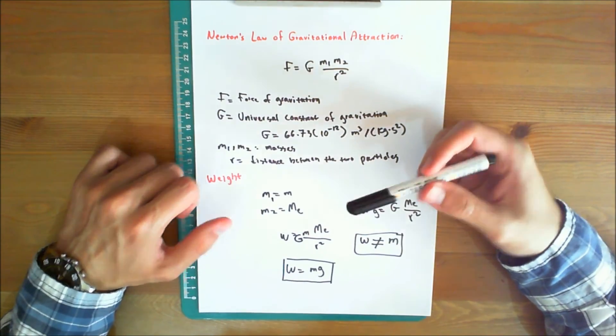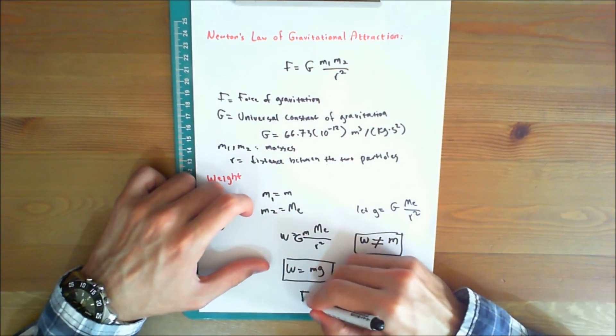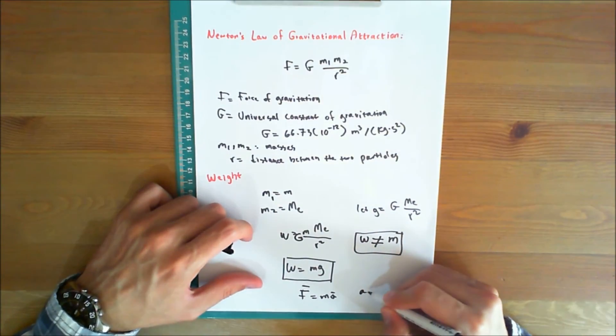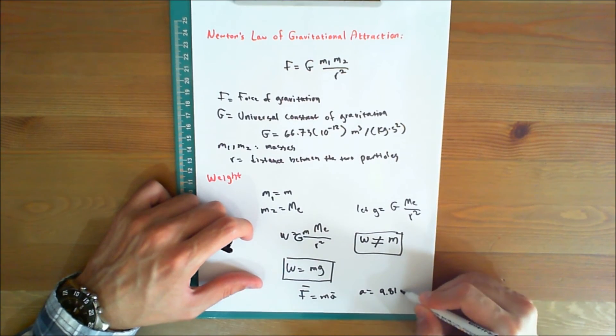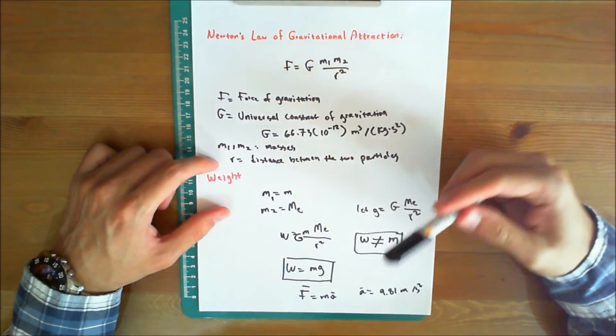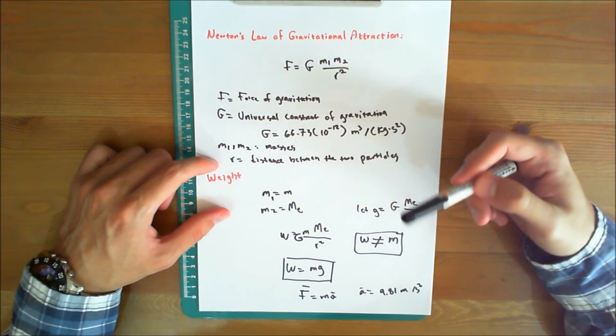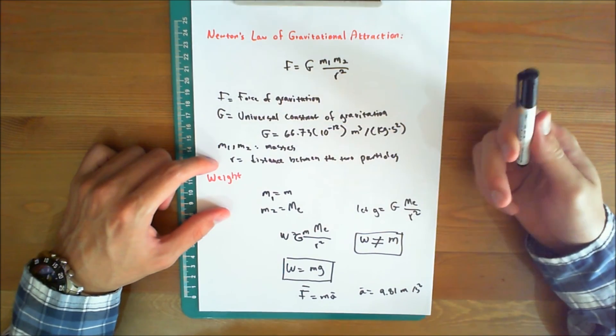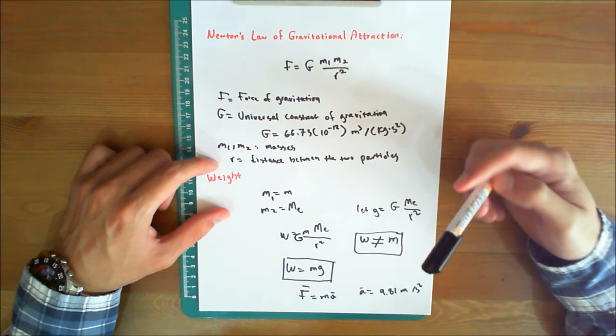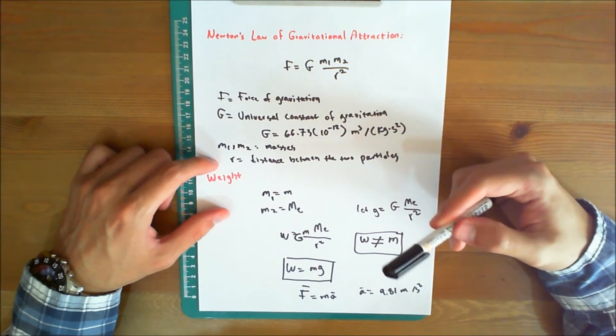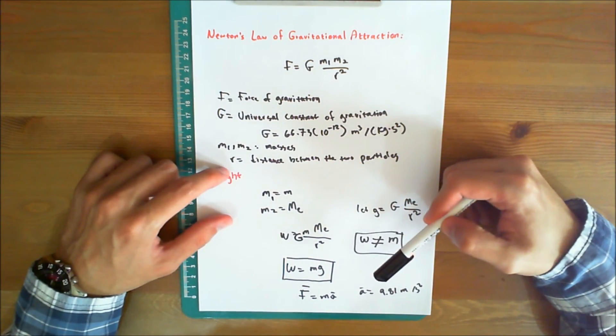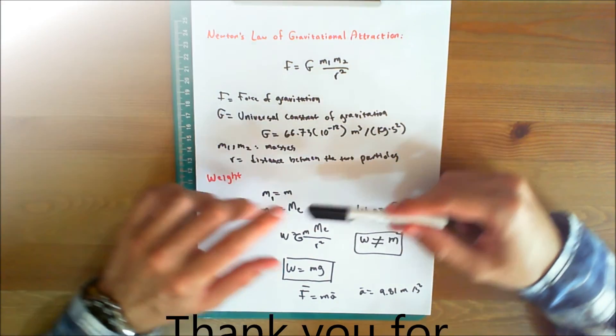Since g is equal to 9.81 meters per second squared, approximately. Since it depends on r, it can be seen that the weight of a body is not an absolute quantity. Instead, its magnitude is determined from where the measurement was made, as discussed earlier. For most engineering calculations, however, it is determined at sea level and at a latitude of 45 degrees, which is considered the standard location.